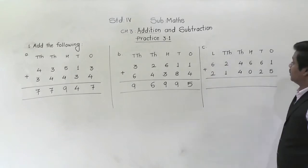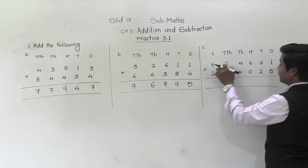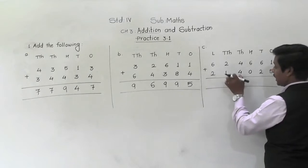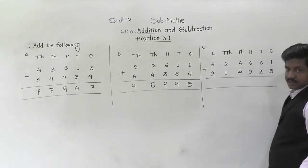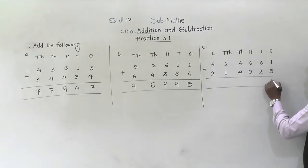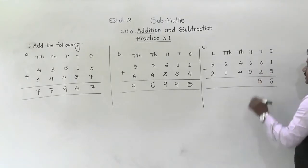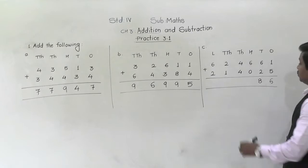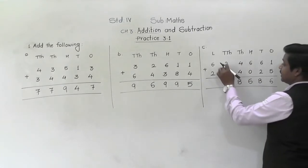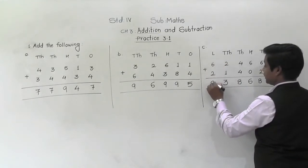Example c has six-digit lakh numbers: 6,24,661 plus 2,14,025. We start from the ones place — one plus five is six; six plus two is eight; six plus zero is six; four plus four is eight; two plus one is three; six plus two is eight.